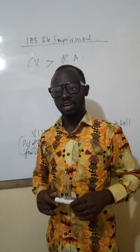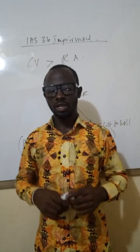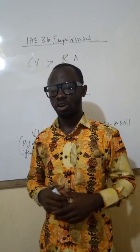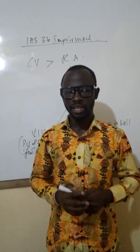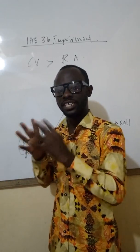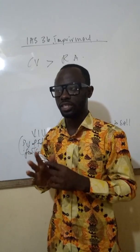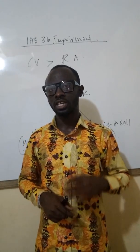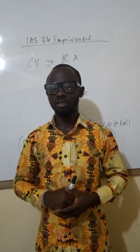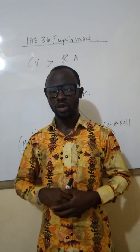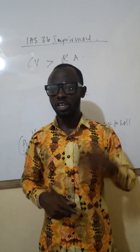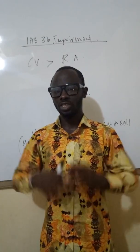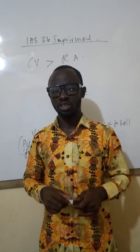One of the accounting standards you are going to be meeting in the exam hall is IAS 36, Impairment of Assets. This is very fundamental to the syllabus, whether the examiner asks you a dedicated question on impairment or not. Sometimes when you are preparing consolidated financial statements, you will be meeting impairment — it can be impairment of goodwill, impairment of investment property, or impairment on some intangible assets or a whole cash generating unit of a business.